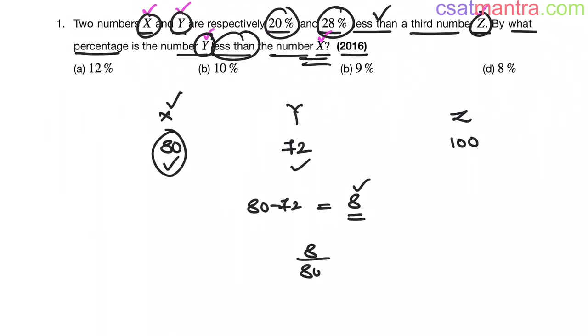So 8 by 80 into 100. 8 tensa, 10 tensa. So 10 percent. 8 is 10 percent of 80. 8 tensa, 80. So Y is 10 percent less than X. So our answer is B.